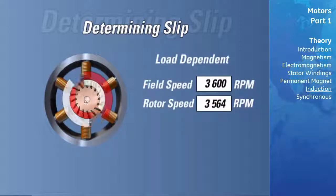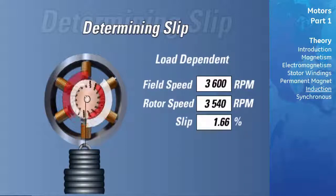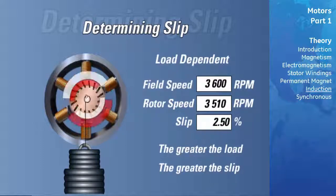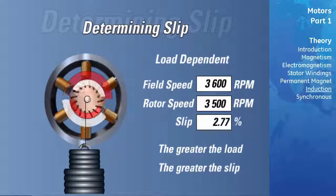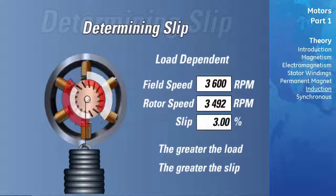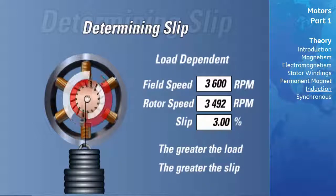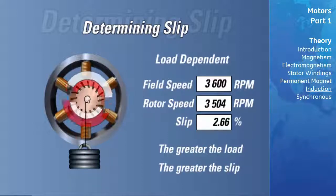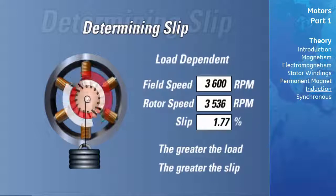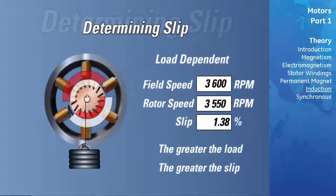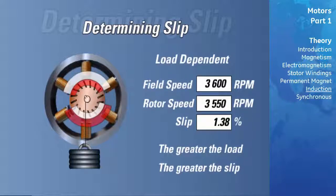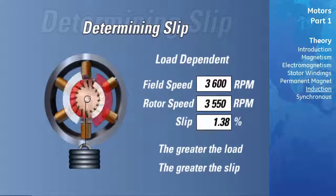Slip is load dependent. For example, if there is an increase in load, the rotor will slow down relative to the stator's rotating field. As a result, the lines of flux in the stator's magnetic field will cut the rotor bars at a faster relative speed, inducing a larger voltage in the rotor bars, which in turn induces a larger circulating rotor current. This larger rotor current produces a stronger rotor field, which interacts with the stator field to produce a stronger torque to overcome the increase in load. If the load were to decrease, the rotor will speed up, the stator field cuts the rotor bars at a slower relative speed, inducing a smaller voltage and lower rotor current. This lower rotor current produces a smaller, weaker rotor field, which interacts with the stator field to produce a lower torque to overcome the decrease in load.